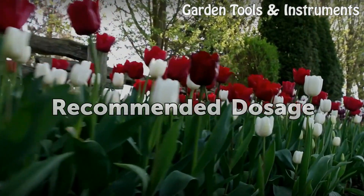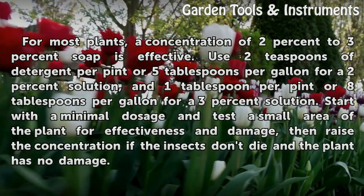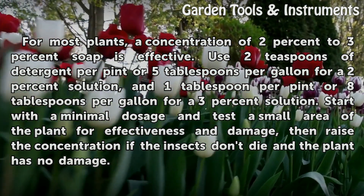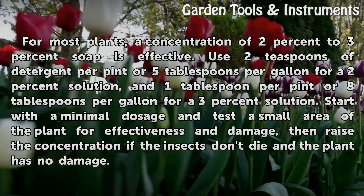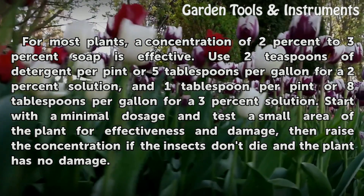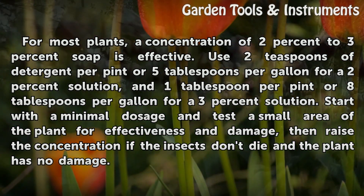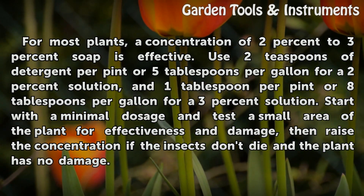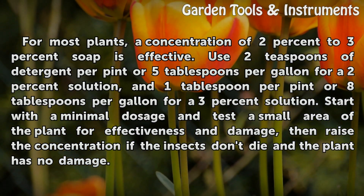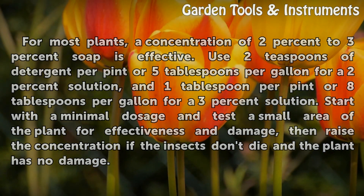For most plants, a concentration of 2% to 3% soap is effective. Use 2 teaspoons of detergent per pint or 5 tablespoons per gallon for a 2% solution, and 1 tablespoon per pint or 8 tablespoons per gallon for a 3% solution. Start with a minimal dosage and test a small area of the plant for effectiveness and damage, then raise the concentration if the insects don't die and the plant has no damage.